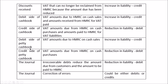Debit side of the petty cashbook: VAT amounts due to HMRC on cash sales — debit petty cash, credit sales, credit VAT — increasing the VAT liability — credit. Credit side of the petty cashbook: VAT due from HMRC on cash purchases — credit petty cash, debit expense, debit VAT — reduction of the liability — debit. Anything in the journal, such as irrecoverable debts, reduces the amounts due from customers and therefore amounts to be paid to HMRC — reduction in liability — debit. Journal corrections of errors could be either debits or credits depending on the error.